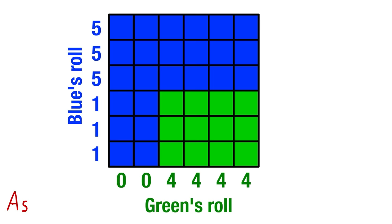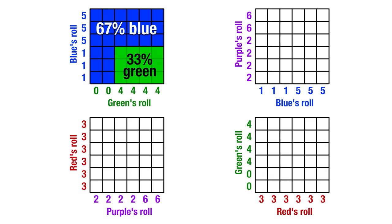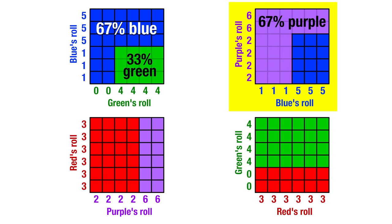As expected, more than 50% of this graph is colored blue, which means that blue beats green. We can do something similar for the other match-ups, blue versus purple, purple versus red, and red versus green. And now we can just see visually that purple covers more area than blue, red covers more area than purple, and green covers more area than red.